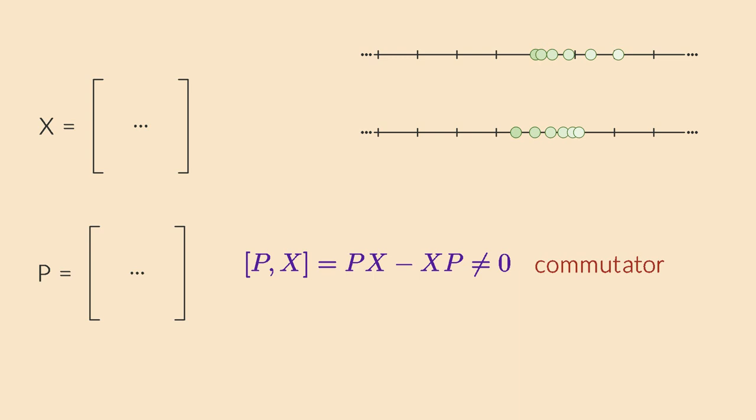These kinds of commutators are central to the mathematical treatment of quantum physics. When the commutator is non-zero, it tells us that the two measurements don't commute, which means that the order of measurement is important. The Heisenberg uncertainty principle can also be expressed in terms of commutators. Since x and p don't commute, you can never know both the position and the momentum of a particle at the same time.